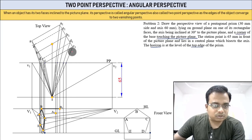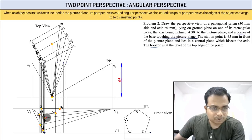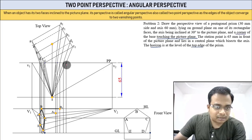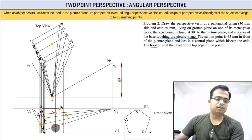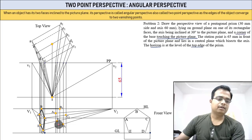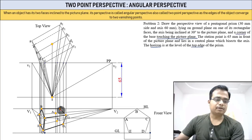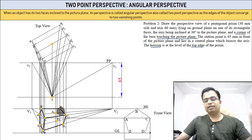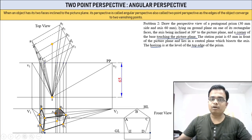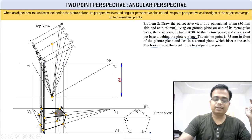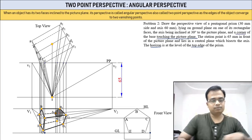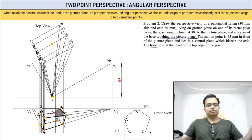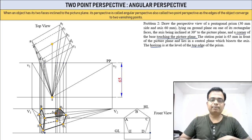Find the intersections to locate C1, A1, D1, and E1. Darken the visible portions and add hidden lines for the portions not visible. That's how a two-point perspective of a pentagonal prism is completed.